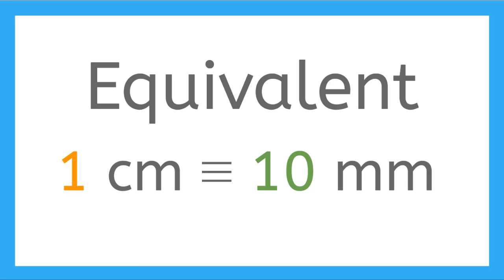But the word equivalent means that two things are the same in a certain way. One centimeter is equivalent to 10 millimeters because they are the same length, but they are in different units and different ways of measuring.